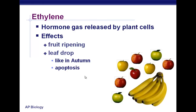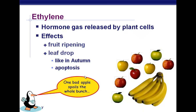Ethylene is basically pushing the plant toward apoptosis — cell death — and toward a higher age. That idea of one bad apple spoiling the whole bunch is because this gas is produced and spreads to surrounding fruit in a closed container, triggering more ethylene production and faster ripening in all of them.